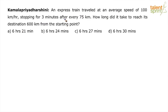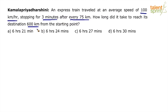So, it sounds like a simple question, right? There is an express train which travels at a speed of 100 km per hour, but it stops for 3 minutes after every 75 km. After travelling every 75 km, the train stops for 3 minutes. How long did it take to reach its destination 600 km from the starting point? Basically, it has to cover a distance of 600 km — so how long will it take?